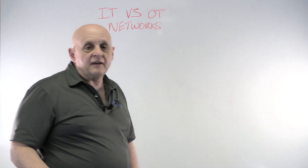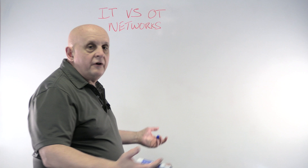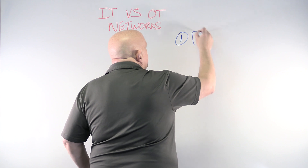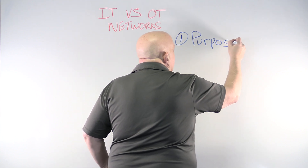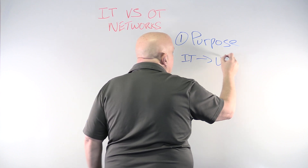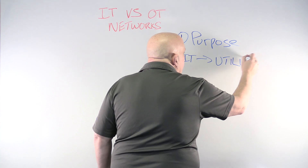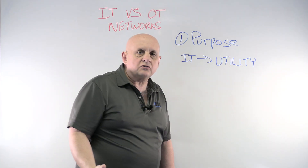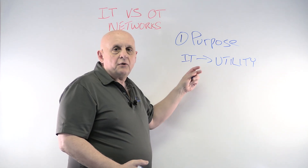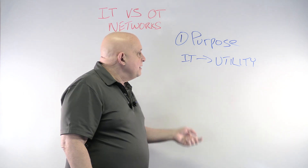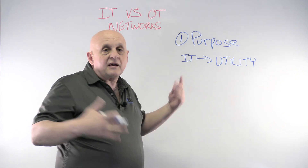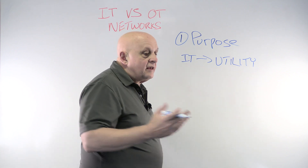So what's the first thing? Number one is: what purpose does the network have? If you're an IT network, what IT is trying to accomplish is essentially to provide a utility. They look at providing Ethernet service to their customers, just like the people that supply the water, supply electricity, supply the HVAC throughout the building — they just want to make sure there's a service on and people can use it. They look at it like it's a utility.